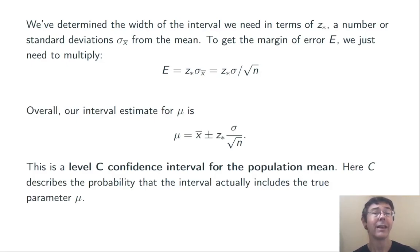Overall, our interval estimate for the population mean mu should be x-bar plus or minus z-star sigma over the square root of n.